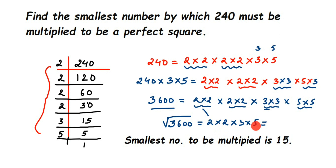The square root of 3600: from each pair you take one number — one 2, one 2, one 3, one 5 — and multiply them: 2 × 2 = 4, 4 × 3 = 12, 12 × 5 = 60. So the square root of 3600 is 60. To summarize: the smallest number to be multiplied is the product of all unpaired factors. In this case, 3 and 5 were unpaired, so the answer is 15.